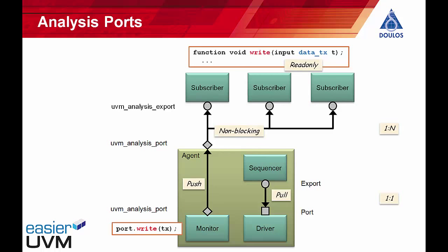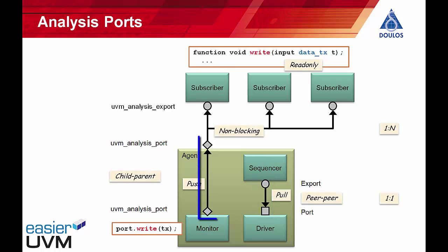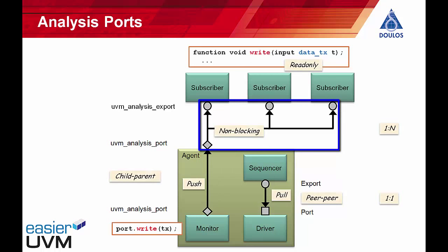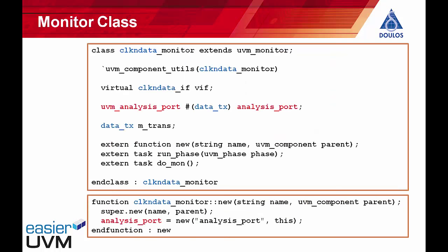On this diagram we can see examples of both a pull connection and a push connection. The driver has a pull connection to its sequencer — the driver calls get_next_item to pull transactions from the sequencer. The analysis port provides a push connection — the write method pushes transactions out through the analysis port. Within the agent we have a peer-to-peer connection between a port on the driver and an export on the sequencer. On the other side, the analysis port on the monitor connects to the analysis port on the agent, which then connects to the exports on the three subscribers. Now let's look at the source code for this example from the code generator.